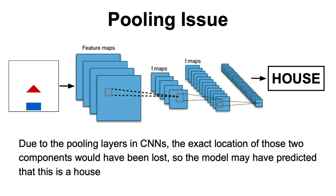What's interesting about this example is that if those two shapes were somewhat far from each other, due to the pooling layers in CNNs, the exact location of those two components would have been lost, so the model may have predicted that this is a house.